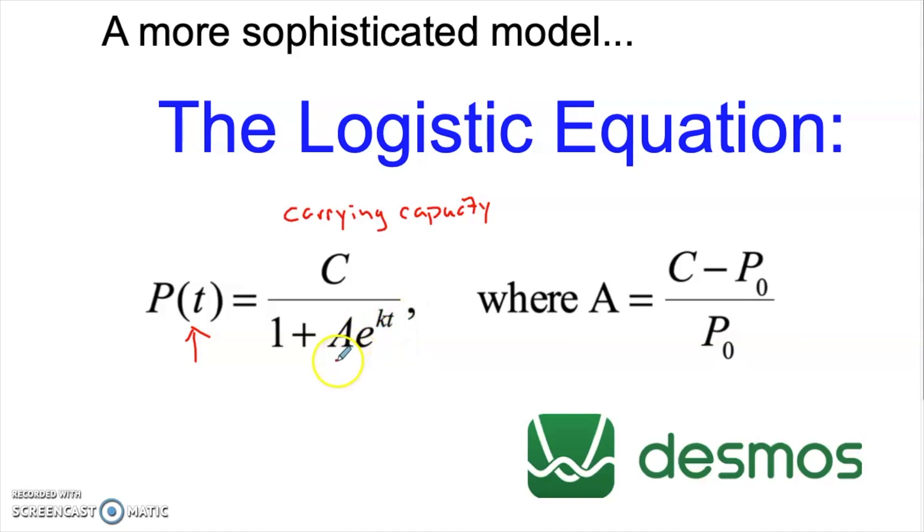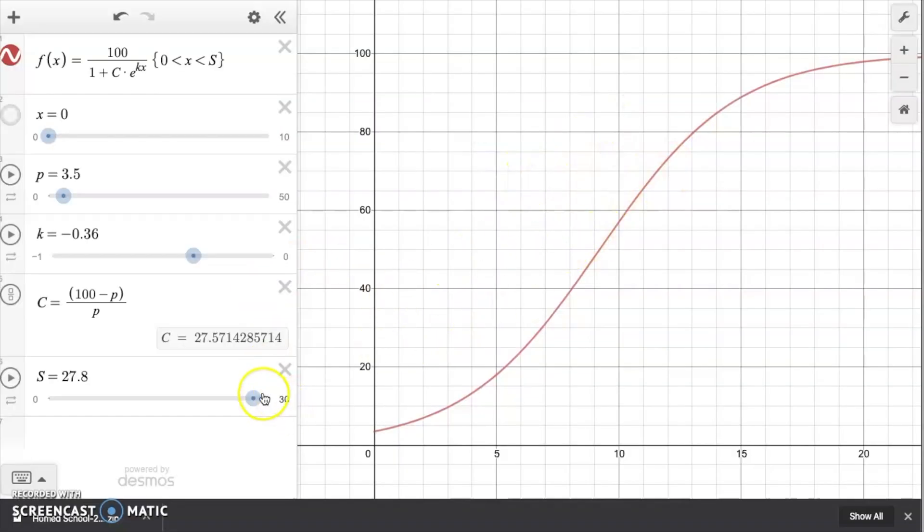Now this constant here, A, is the carrying capacity minus P naught. So that's your initial population, how many bacteria you start with. So we look at the difference between those two. And we divide that by the actual amount you start with. So this is a ratio that's giving us some sense of how big the difference we started with is compared to the amount that we started with. So here's a graph of a logistic equation. And you can see it has that nice S-shaped curve. This equation is set up with a carrying capacity of 100. I have the initial population set to 3.5, and my growth rate is about negative 0.36.